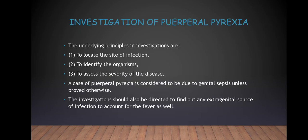How do you investigate puerperal pyrexia? The underlying principles in investigations are: 1. To locate the site of infection. 2. To identify the organisms. 3. To assess the severity of the disease. A case of puerperal pyrexia is considered to be due to genital sepsis unless proved otherwise. The investigation should also be directed to find any extra-genital source of infection to account for the fever.